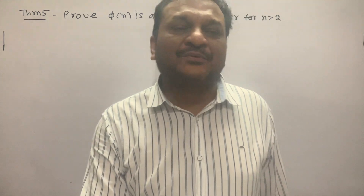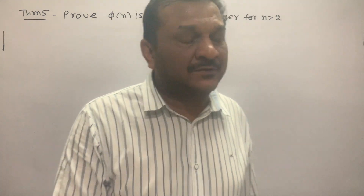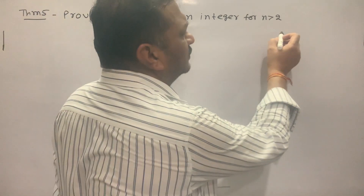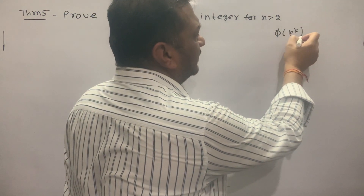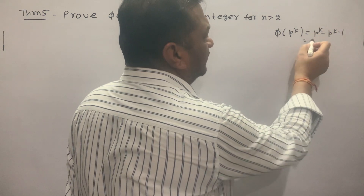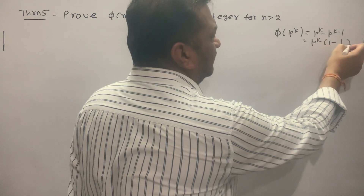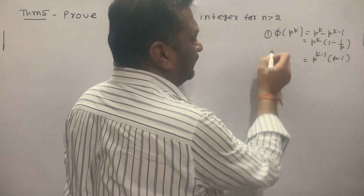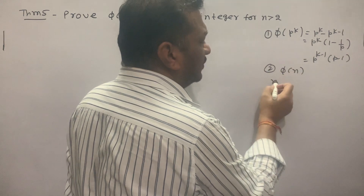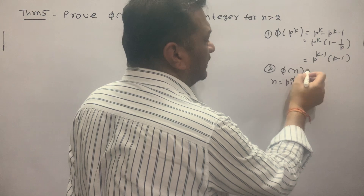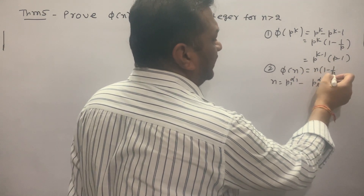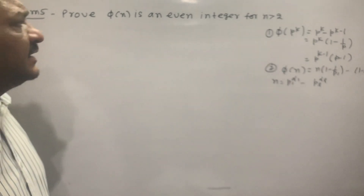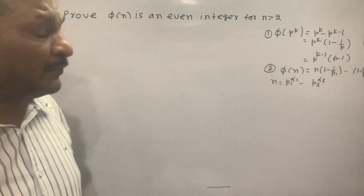Hello students, today we'll continue with important theorems of the Euler phi function. We'll prove that phi(n) is even for n greater than 2. Before this, let me recall the theorems already proved: phi(p^k) = p^k - p^(k-1), and phi(n) = p1^alpha1 * ... * pr^alphar multiplied by (1 - 1/p1)...(1 - 1/pr).